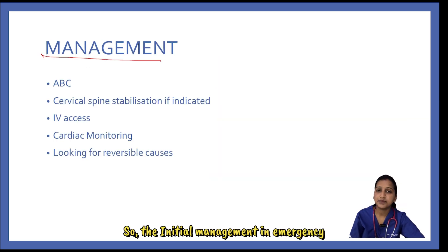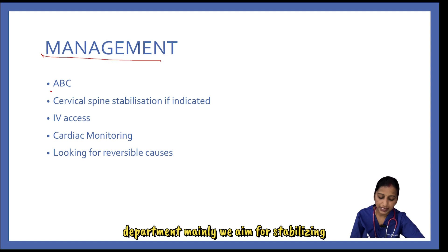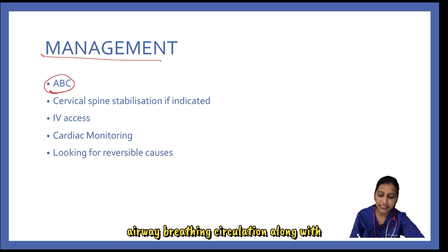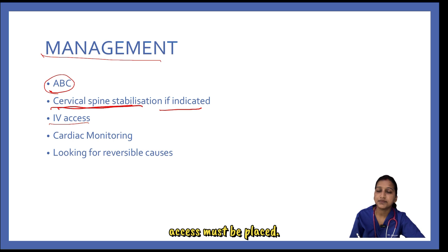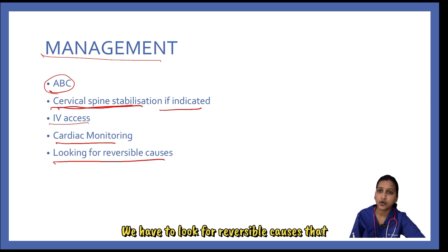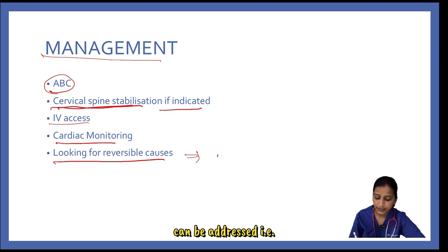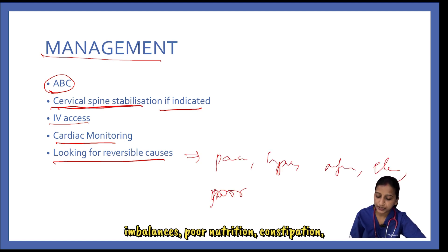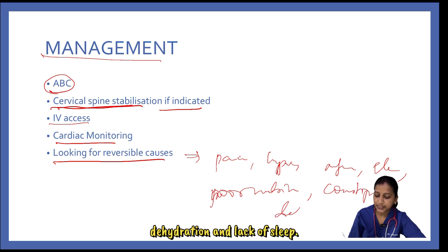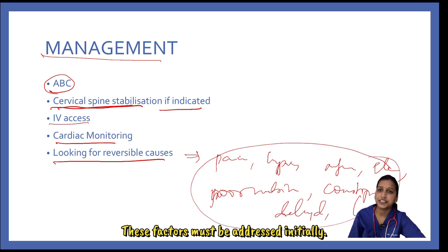The initial management in the emergency department aims for stabilizing airway, breathing, and circulation along with C-spine stabilization if indicated. IV access must be placed and cardiac monitoring must be done. Reversible causes must be addressed: pain, hypoxia, infection, electrolyte imbalances, poor nutrition, constipation, dehydration, and lack of sleep.